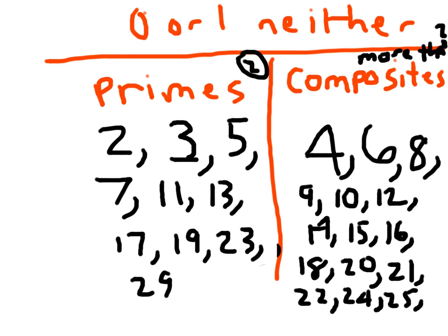You'll notice one thing about the prime numbers — point to all of those that are even. Two is our only even prime number. That means if a number is divisible by 2 and it's not 2 itself, it's going to be a composite number — like 4, 6, 8, 10, 12, 14, 16, 18, 20, 22, 24, 26, 28, etc.